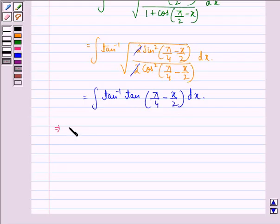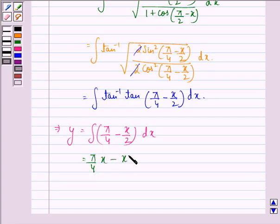This implies that y is equal to integral pi by 4 minus x by 2 dx that is equal to pi by 4 x minus x square by 4 plus c.